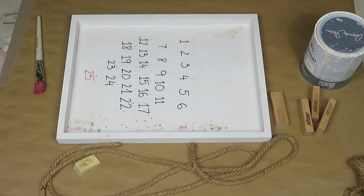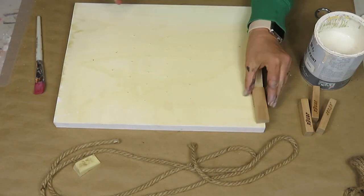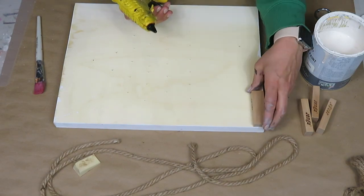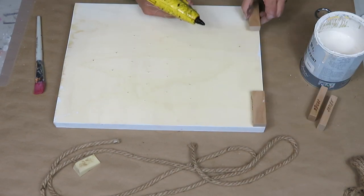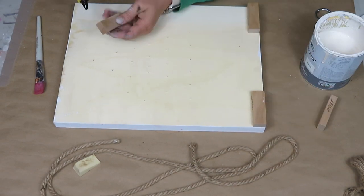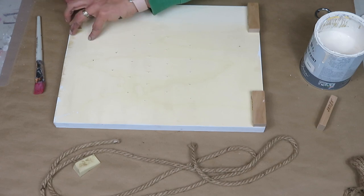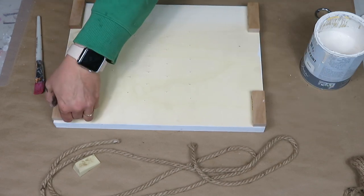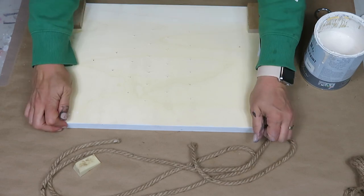But you'll see I end up changing my mind because I wasn't loving the way it looked and the way it was covering, so I ended up switching to graphite for just the inside. I do paint the outside with the old white.